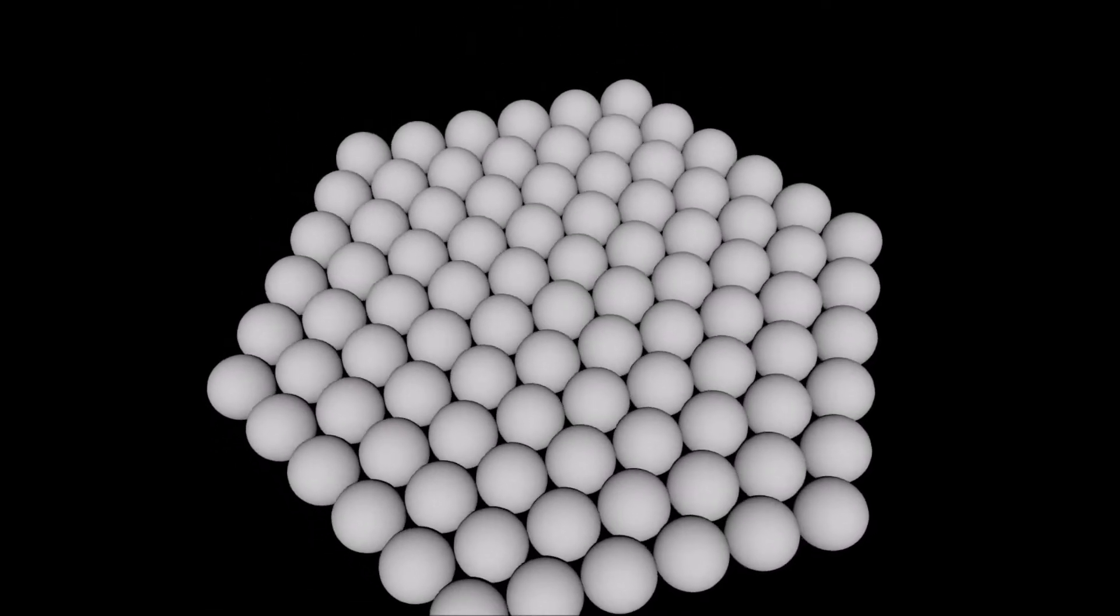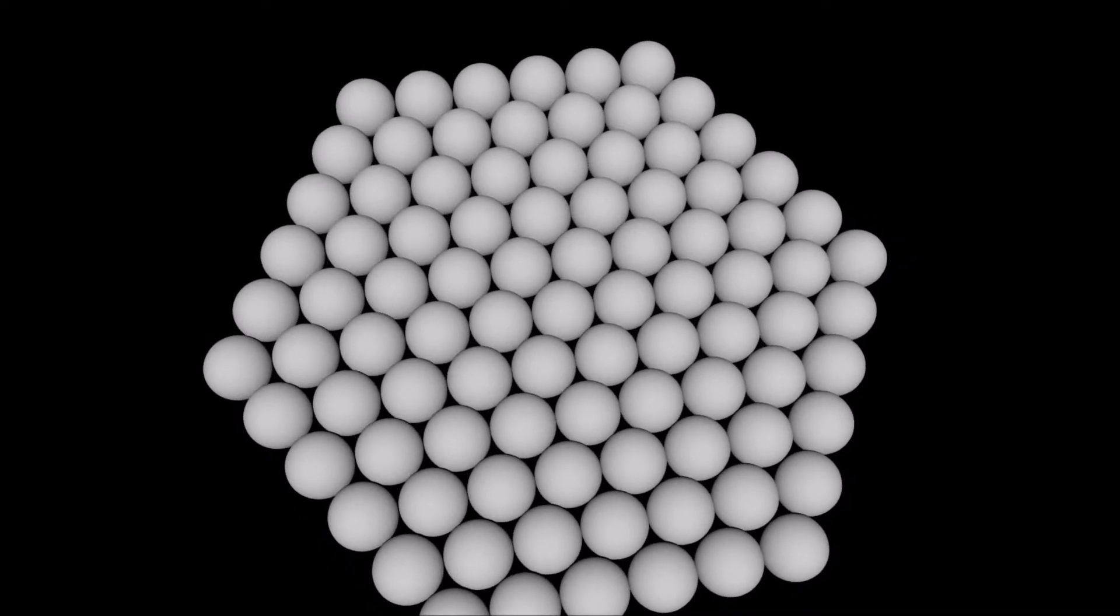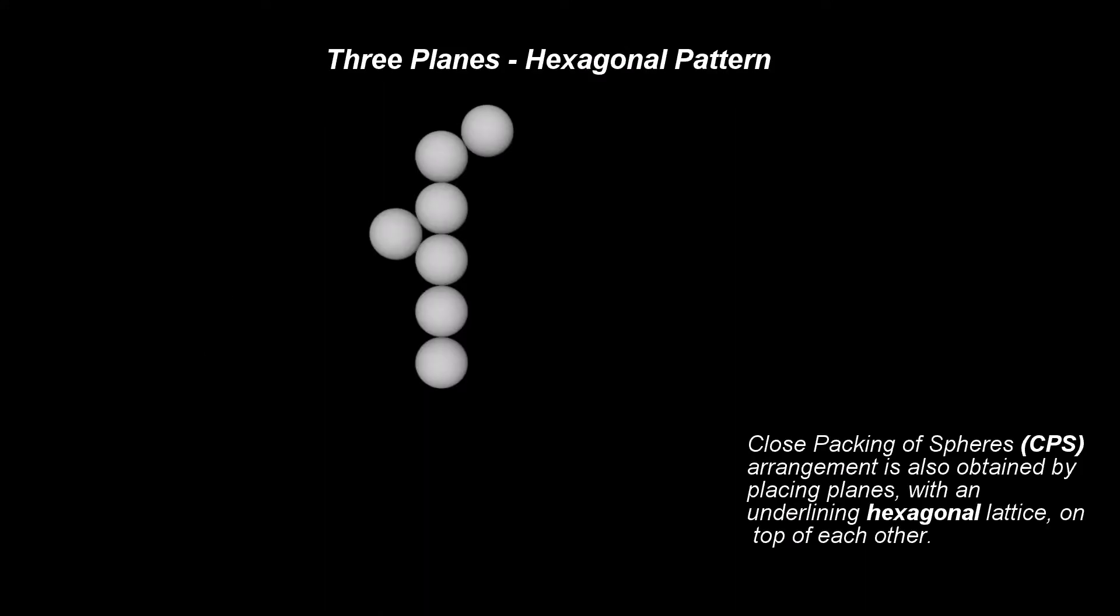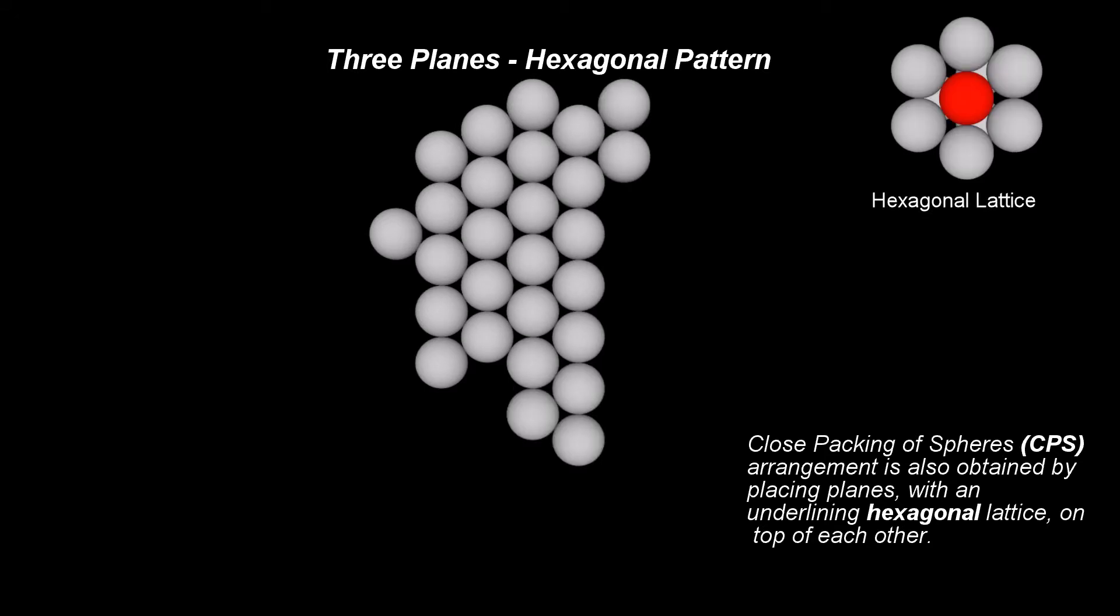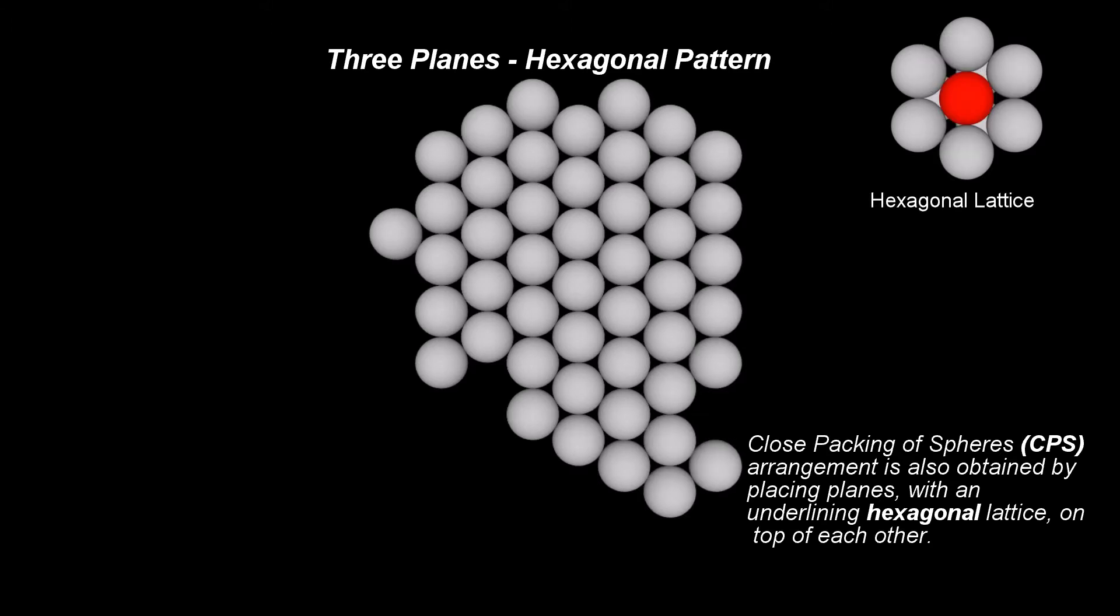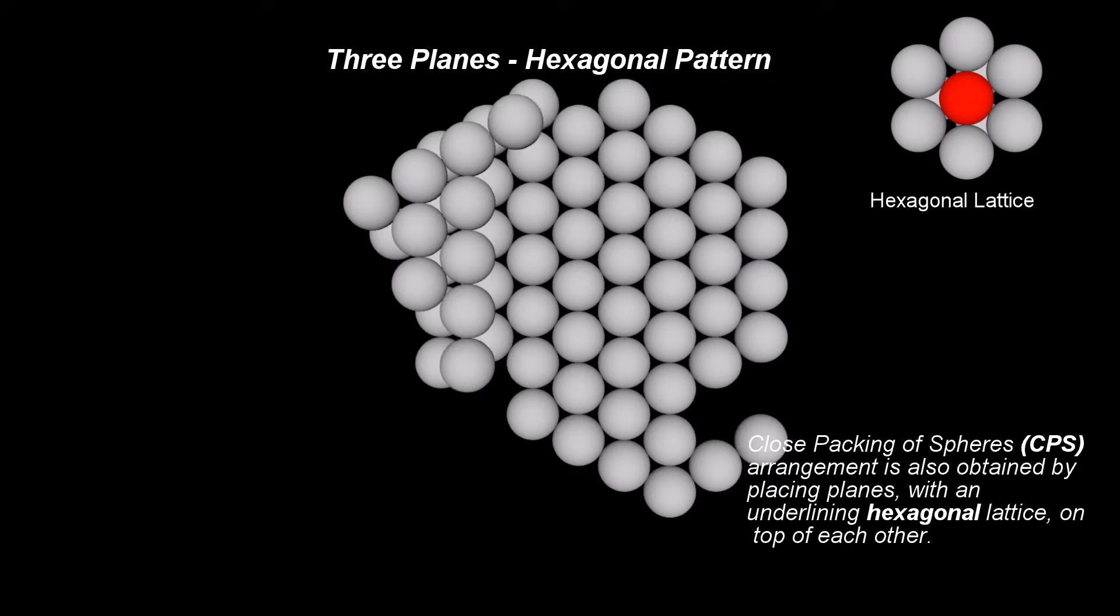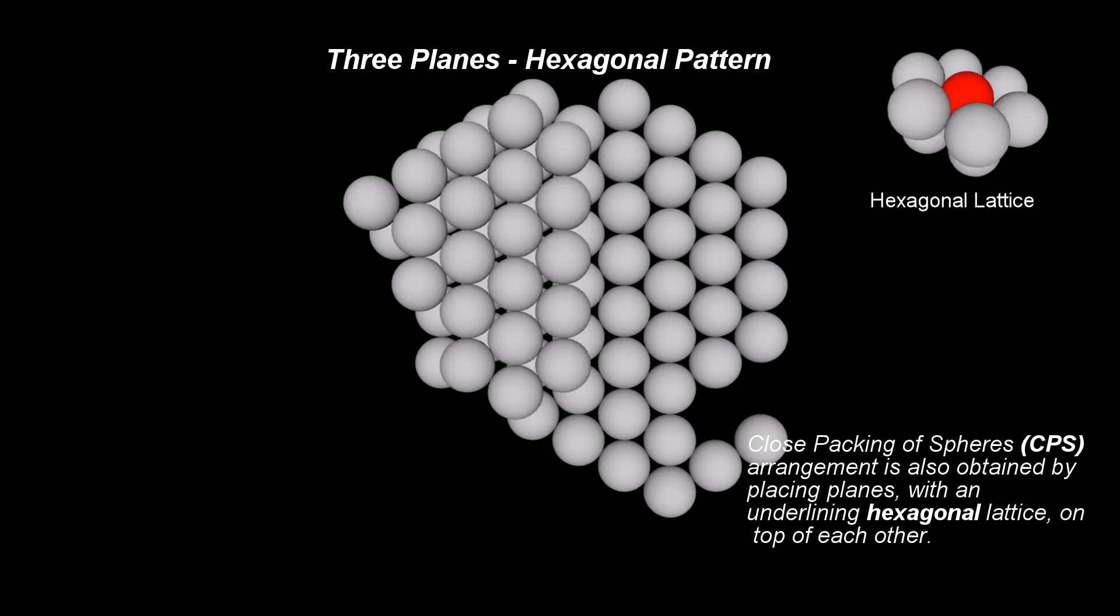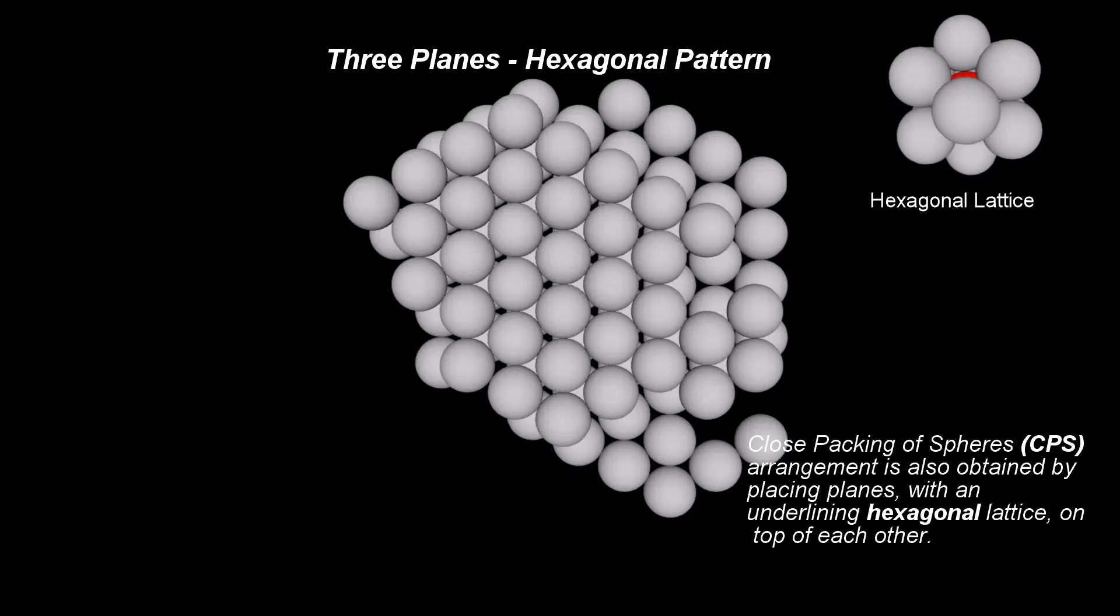For the second layer, as we have seen with the square arrangement before, the balls are placed in the nests formed by a cluster of 3 balls from the first plane. In this case, the planes are closer packed than in the square arrangement. But a ball placed in a nest formed by a cluster of 3 balls does not sink as deep as a ball placed in a nest of a cluster formed by 4 balls, as we have seen in the square arrangement.